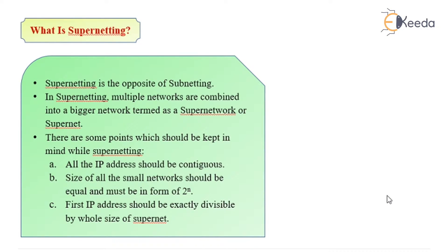There are some important points which should be kept in mind while supernetting. All the IP addresses should be contiguous. The size of all the small networks should be equal and must be in the form of 2 raised to n. The first IP address should be exactly divisible by the whole size of the supernet.